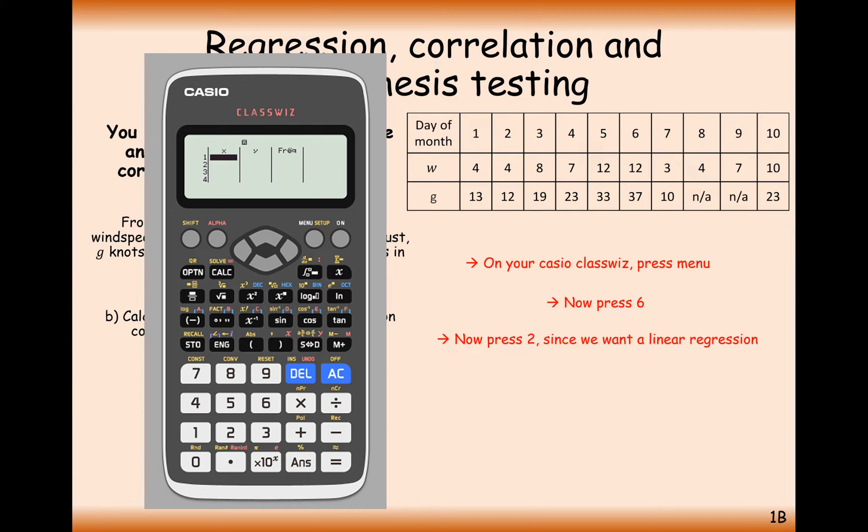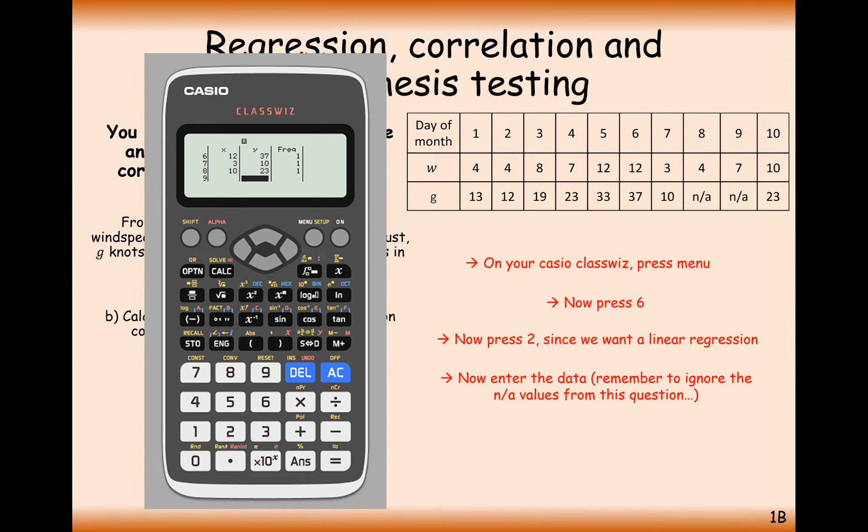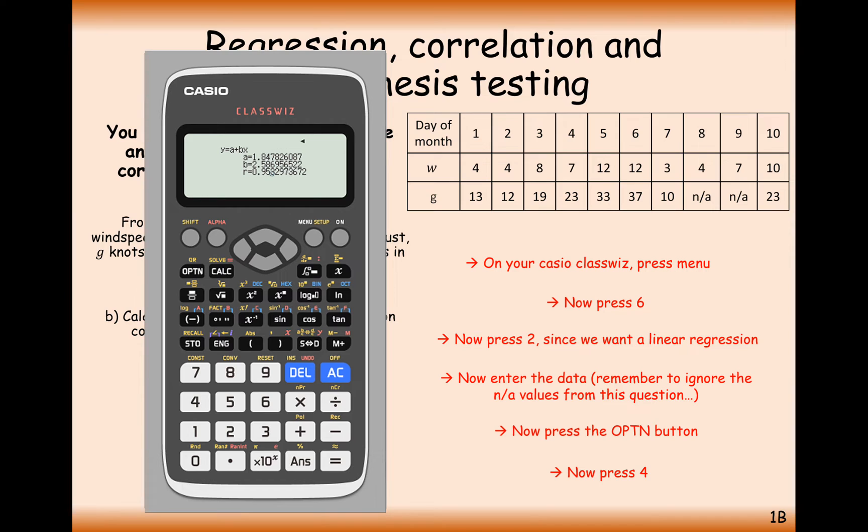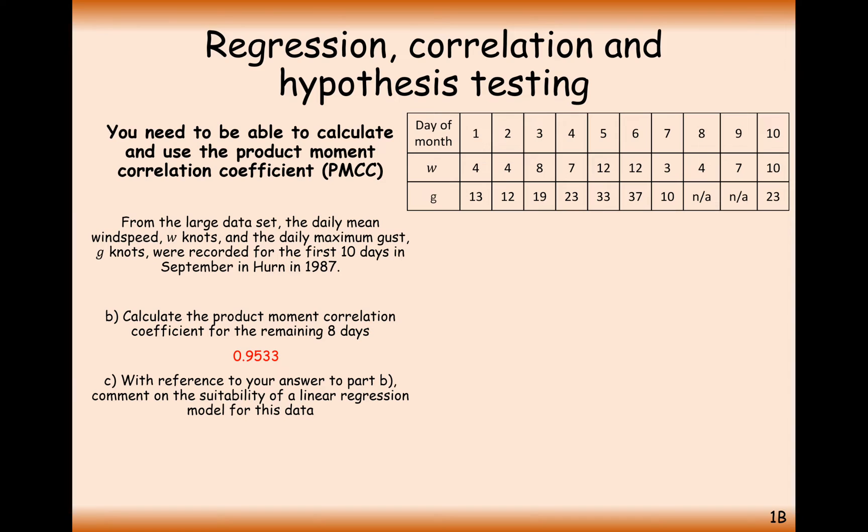Now you've got to type in your data. You're going to type in the W set of data as X and the G set of data as Y. Once you've done that, you then need to hit the option button and you're looking for option number 4, regression calculation. So hit option number 4, and what happens is you get this screen here. So you get A as the value 1.85 roughly, B as the value 2.59 roughly. And R here, that R value there is your product moment correlation coefficient, 0.953 roughly. That's almost perfect correlation there. 0.95 is a pretty good rating for your correlation. So 0.953 is the PMCC.